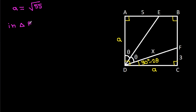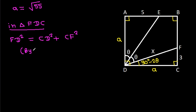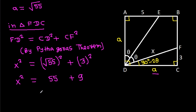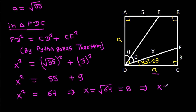In triangle FDC, by Pythagoras theorem, FD squared equals CD squared plus CF squared. So x squared equals A squared plus CF squared, which is (root 55) squared plus 3 squared. That gives x squared equals 55 plus 9 equals 64. So x equals root 64, which is 8. Therefore, x equals 8.